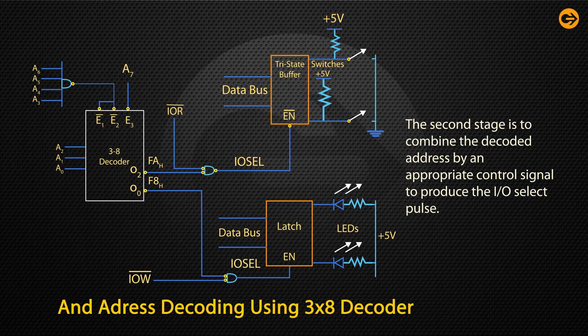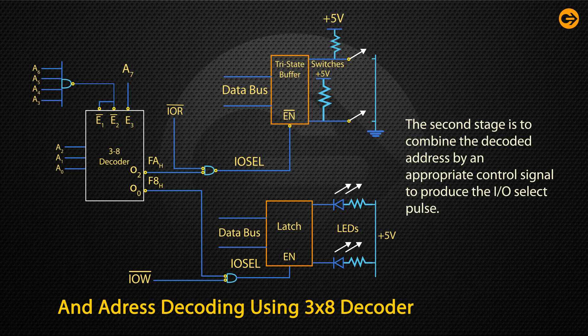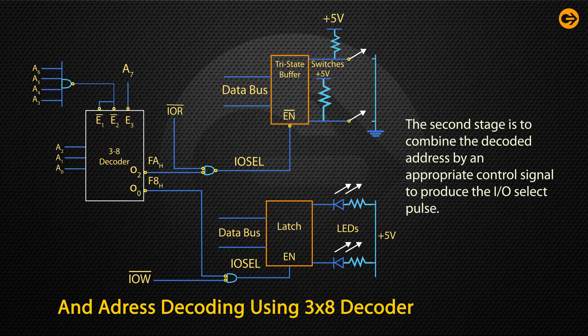The third phase is to utilize this pulse to enable the output port. Figure shows that the I/O select pulse enables the LED latch with the output port address F8H as shown in the figure. A7 to A0 is a demultiplex low-order bus.